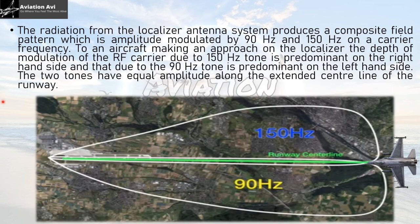The radiation from the localizer antenna system produces a composite field pattern which is amplitude modulated by 90 Hz and 150 Hz on a carrier frequency. The localizer generates two lobes up to 25 nautical miles — one with 150 Hz frequency and another with 90 Hz frequency. Viewing from the aircraft's approach direction, on the left-hand side the aircraft will intersect the 90 Hz frequency, and on the right-hand side it will intersect the 150 Hz frequency. The two tones have equal amplitude along the extended center line of the runway.